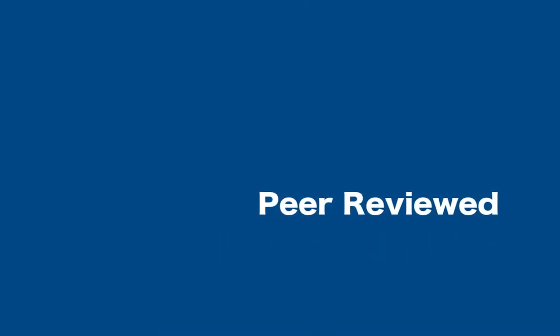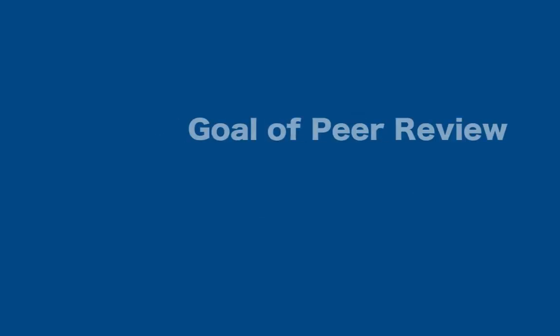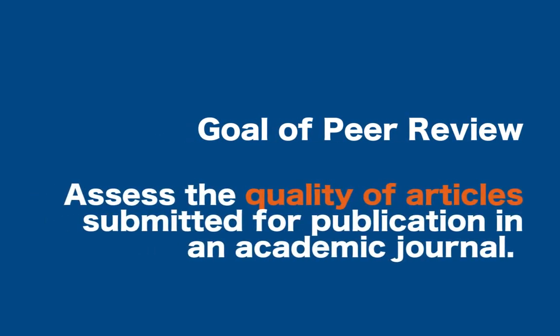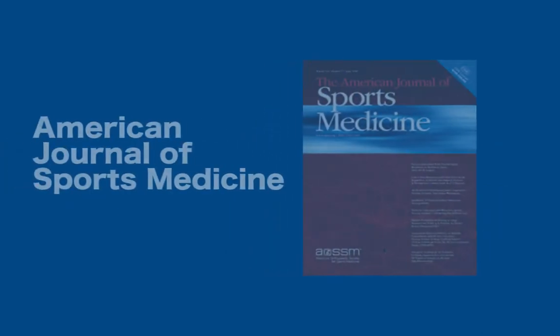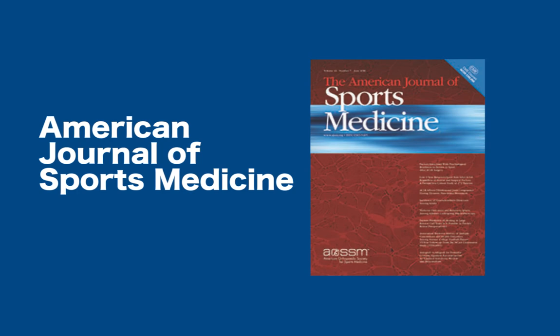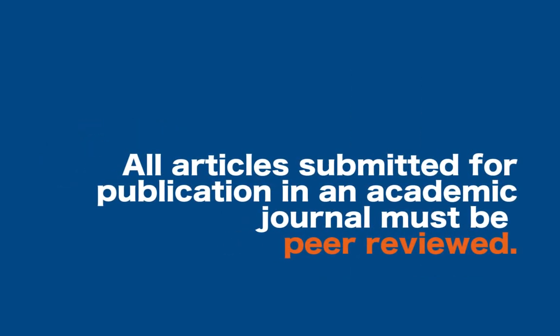Another way we can refer to this is peer-reviewed or refereed. In academic publishing, the goal of peer review is to assess the quality of articles submitted for publication in an academic journal, such as this one, the American Journal of Sports Medicine. Before an article is deemed appropriate to be published in a peer-reviewed journal, it must undergo the process of being peer-reviewed.